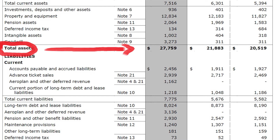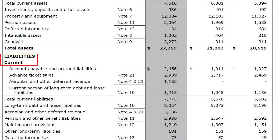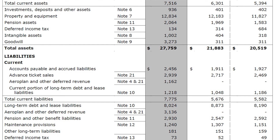Now let's look at liabilities, starting with current liabilities. Accounts payable is 2.4 billion dollars — payable to suppliers for supplies or equipment purchases that Air Canada must pay within the next 12 months. Advanced ticket sales of 2.9 billion dollars is essentially unearned revenue: Air Canada has received payments for future tickets for which it has not yet provided services.